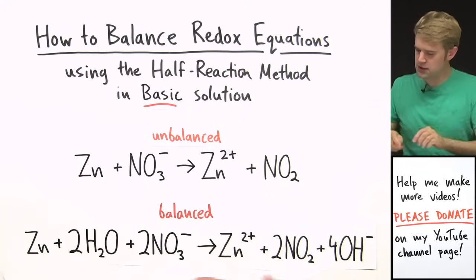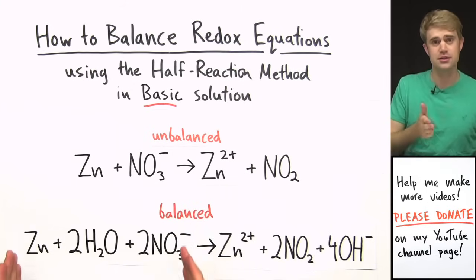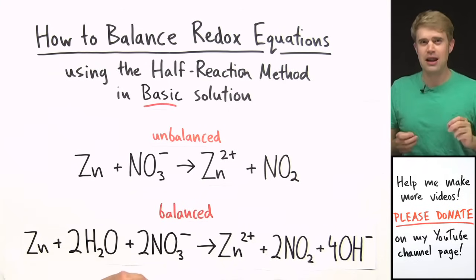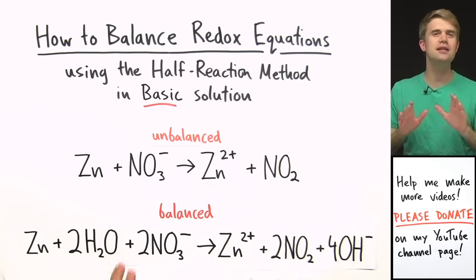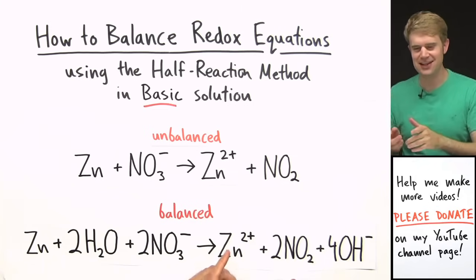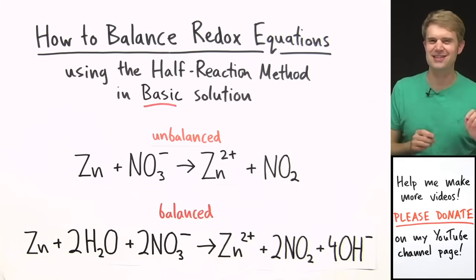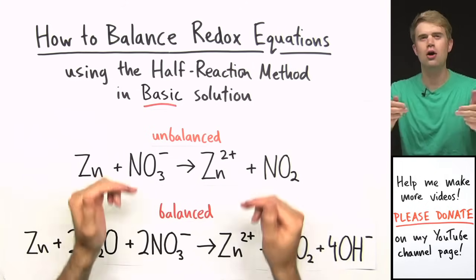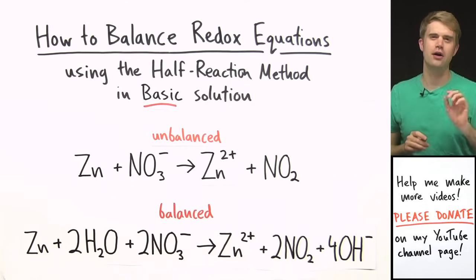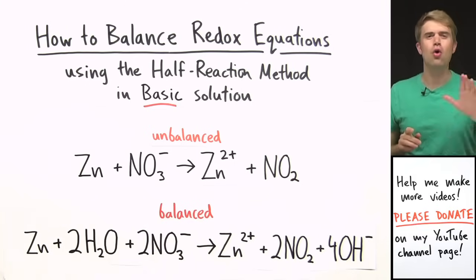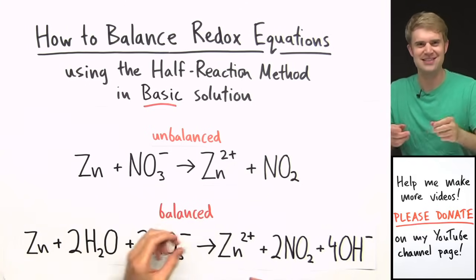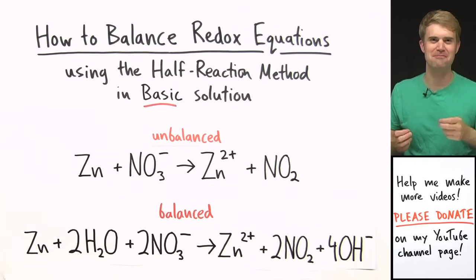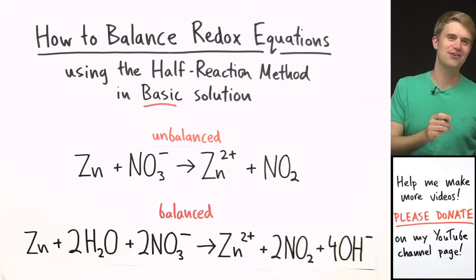Doing this in basic solution just means that we're going to be adding OH⁻ to help balance the atoms, and that's because OH⁻, hydroxide, makes things more basic. The process for balancing in basic solution is really similar to the process for balancing in acidic solution, except it has a couple extra steps at the end. If you're already a rock star at balancing in acidic solutions, feel free to skip through most of this video and just focus on the end part with those extra steps.